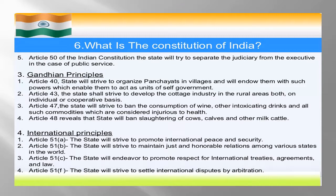Article 50: The state will try to separate the judiciary from the executive in the case of public services — यानि कि कोई government official को लेकर या government system को लेकर कोई judicial case आएगा तो executive को वहाँ से हटाकर सीधा judiciary — जो High Court होगा — वहाँ पर decision लिया जाएगा।